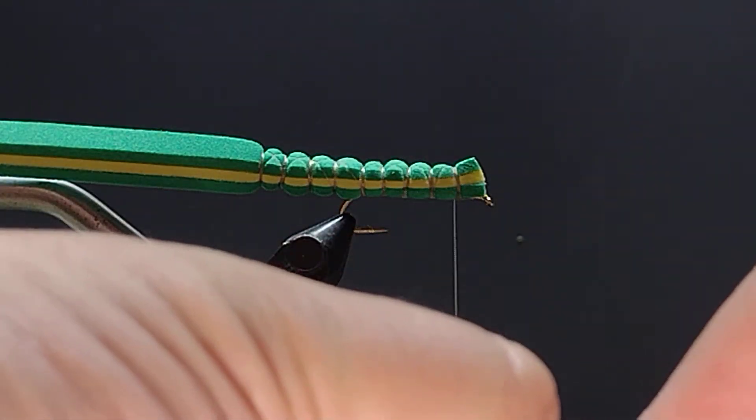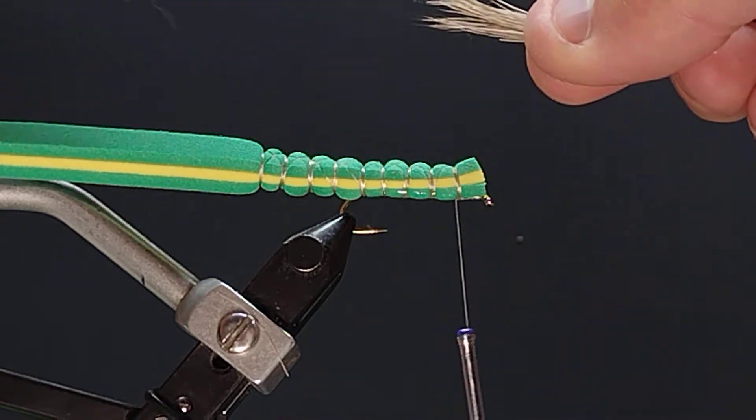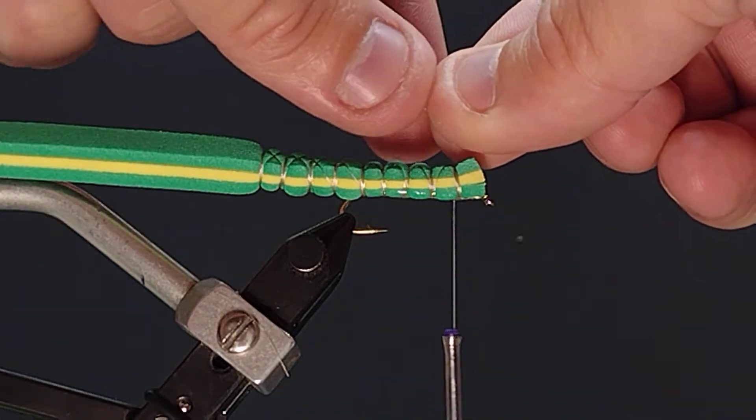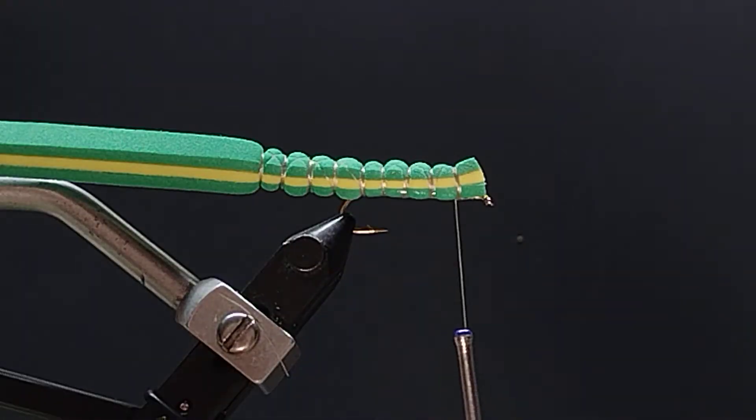Take that clump of deer hair out and just kind of match it up. You can see there it goes back to about the bend of the hook. So that's about what I'm going to measure that there, cut off the excess.